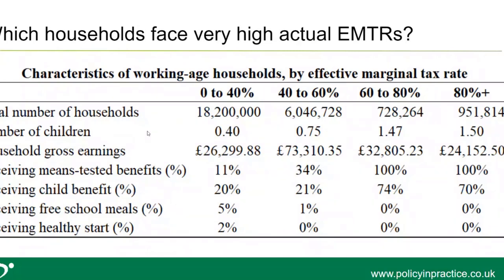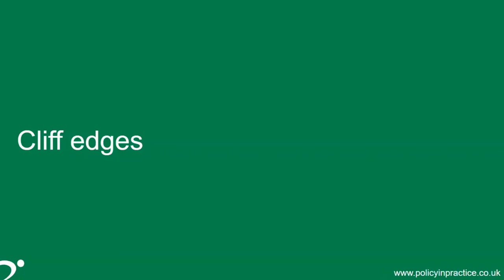Splitting the data into EMTR ranges and focusing on households with EMTRs of 80% or more: there are about 950,000 such households according to the 2020-21 FRS. These households generally have children, have earnings below median income, and are receiving means-tested benefits — which of course makes sense. Most are receiving child benefit, but apparently none are receiving passported benefits. So these are a large chunk in absolute terms but a small proportion of the total number of households affected by EMTRs.